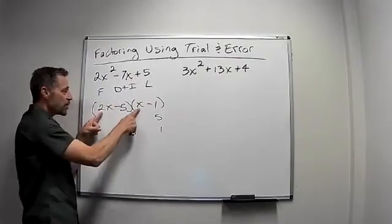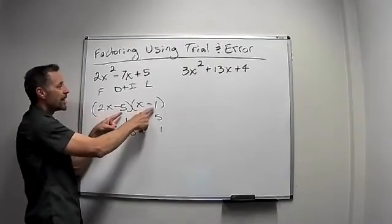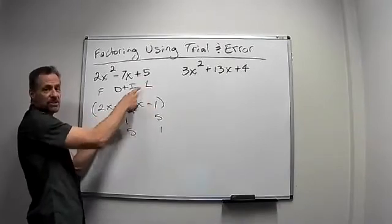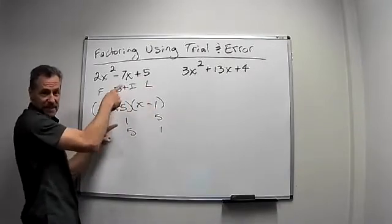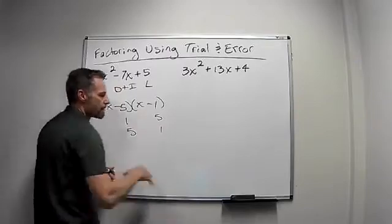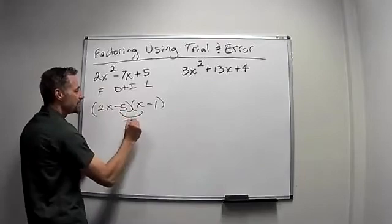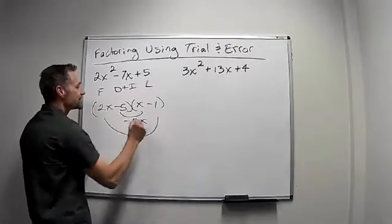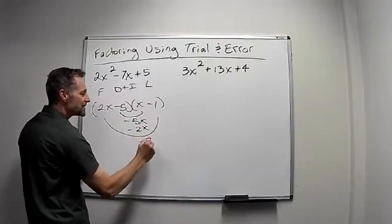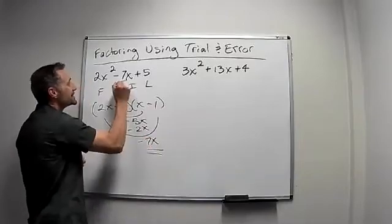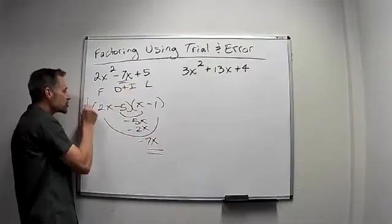Let's check to verify this works. I know I have the 2x squared. I know I have the plus 5 here. Let's just check the outside plus the inside to get this middle term. If I erase these, I can easily see that's a negative 5x. That's a minus 2x, which add up to negative 7x, which is exactly what I wanted. So this is the correct factor.